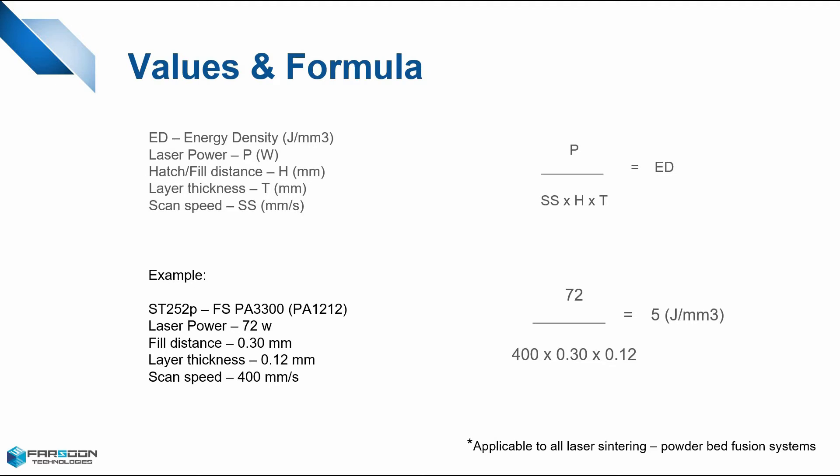For example, we have our FS PA3300, which is a PA1212 material that we are running in our small platform ST252. We have our laser power set at 72 watts, our fill distance at 0.3 millimeters, our layer thickness at 0.12 millimeters, and our scan speed set to 400 millimeters per second. When we divide our laser power by our layer thickness, fill distance, and scan speed, we come out with 5 joules per millimeter cubed.